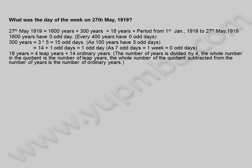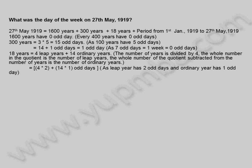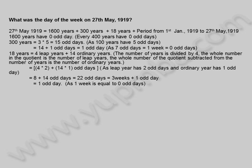18 years is equal to 4 leap years plus 14 ordinary years. The number of years is divided by 4; the whole number in the quotient is the number of leap years, and that subtracted from the number of years gives the number of ordinary years. This equals 4 into 2 plus 14 into 1 odd days, since a leap year has 2 odd days and an ordinary year has 1 odd day. That equals 8 plus 14 equals 22 odd days, which equals 3 weeks plus 1 odd day, equaling 1 odd day.